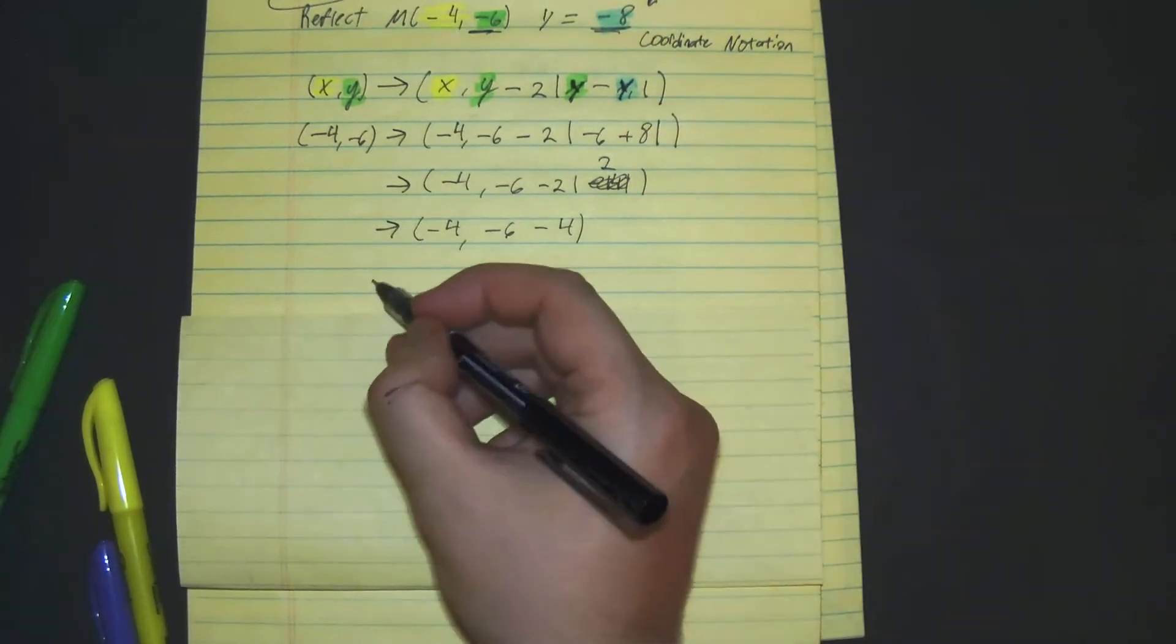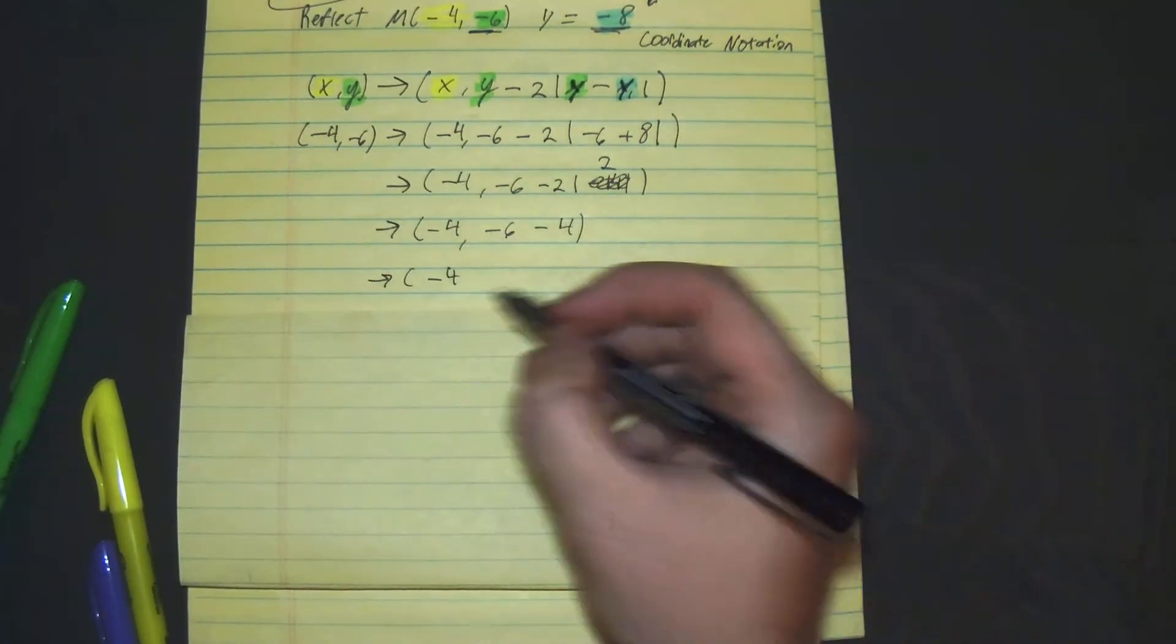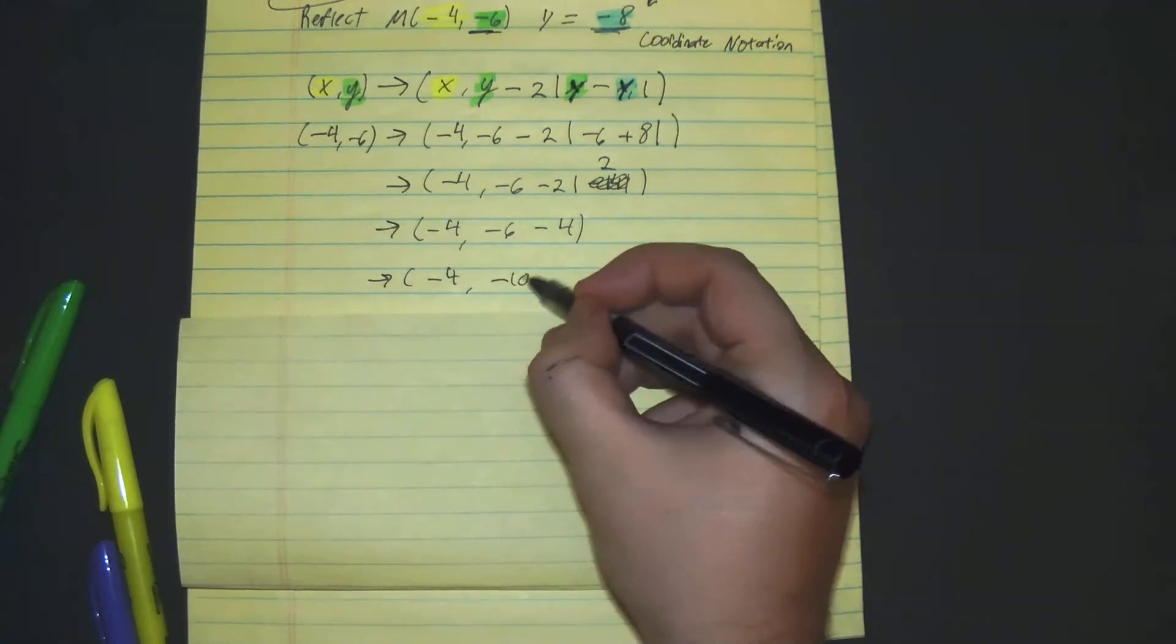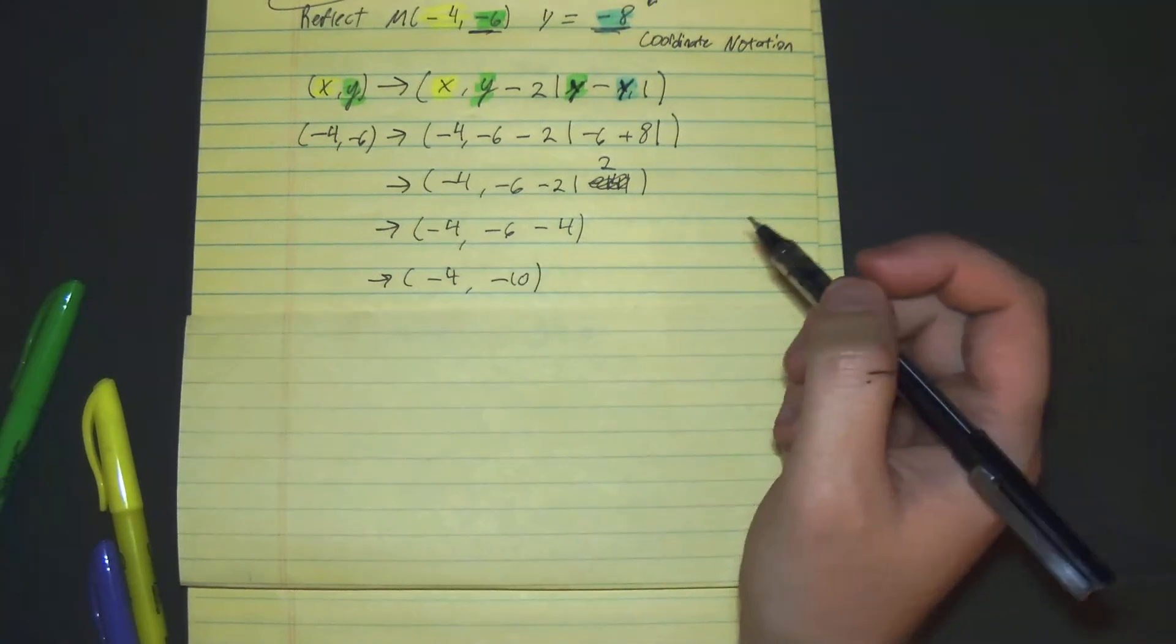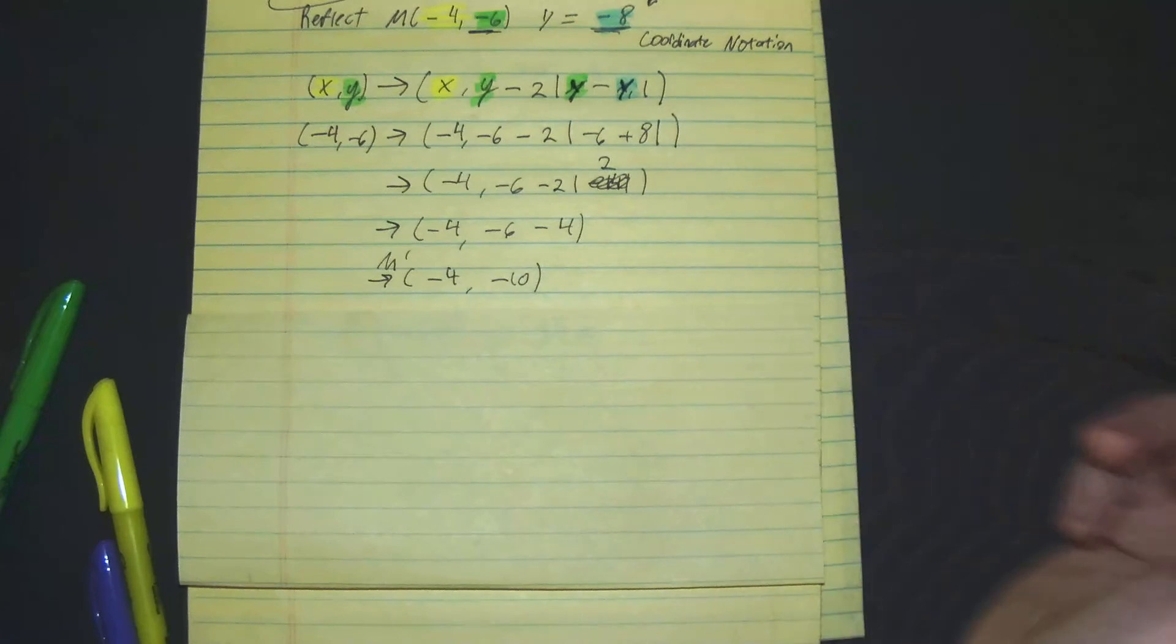And to end our answer, we would get our location of m prime is at (-4, -10). That's our location of m prime.